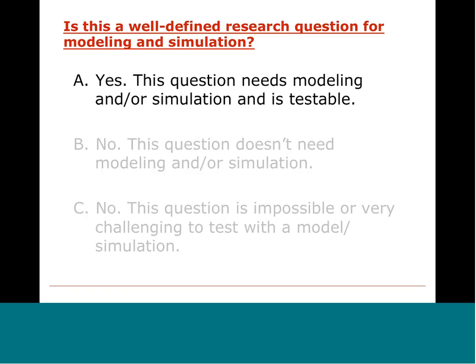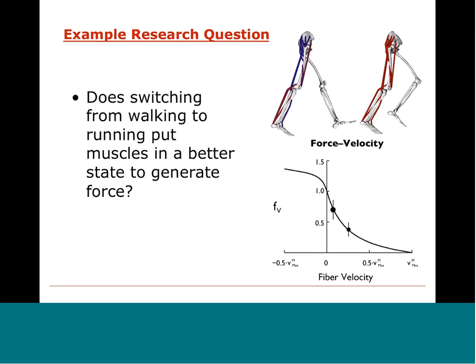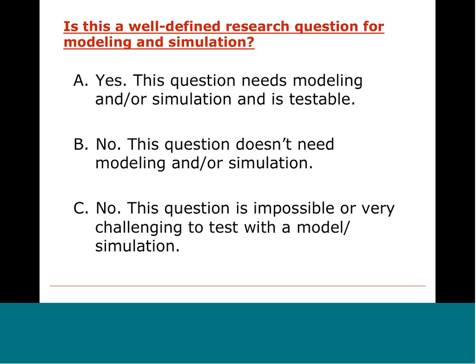Here's another example. The force a muscle can generate depends not only on its cross-sectional area, but also its length, velocity, and the interaction between the muscle and tendon. Consider the research question: does switching from walking to running put muscles in a better state to generate force? We have a musculoskeletal model, a forward simulation framework, and experimental motion data for walking and running at a range of speeds. The answer is A — yes, this needs modeling and simulation and we can also test it.